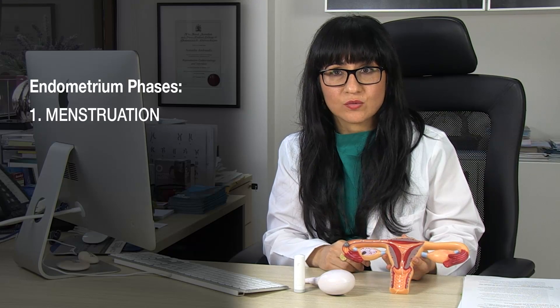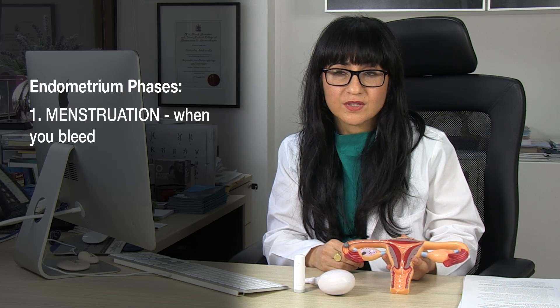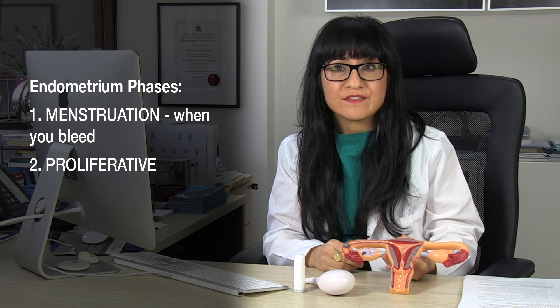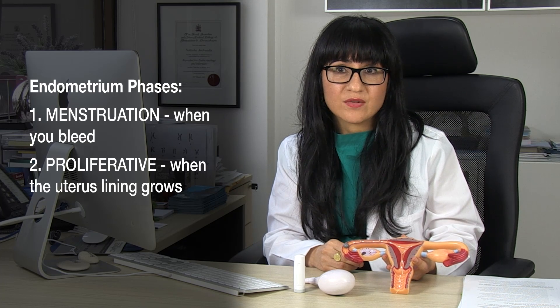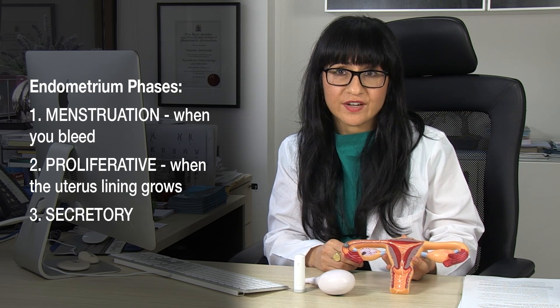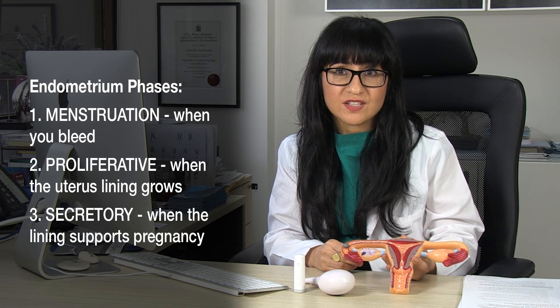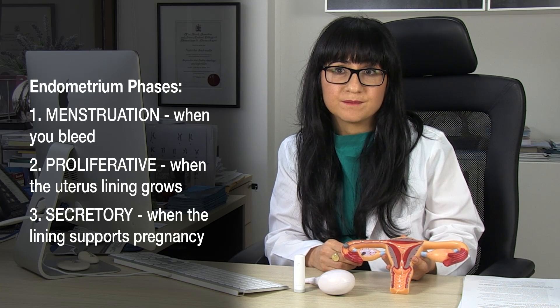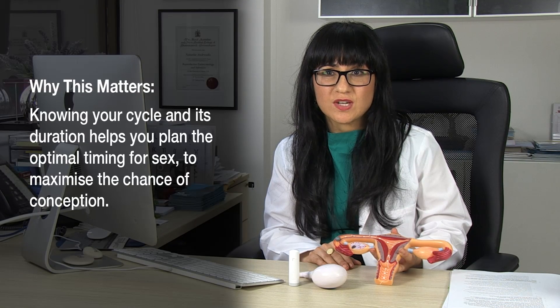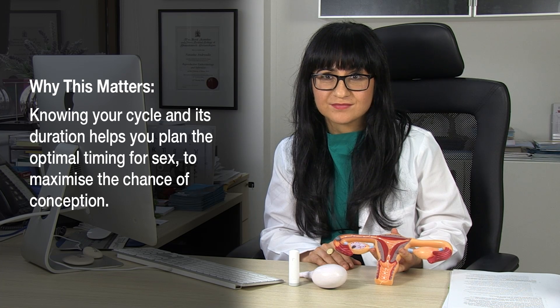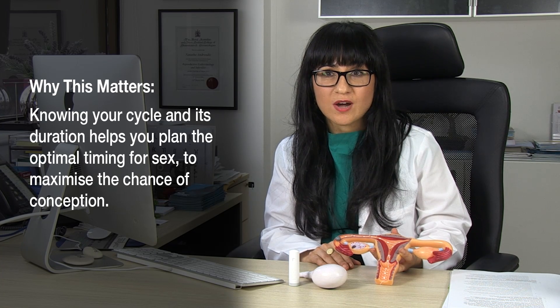The first phase is menstruation, when you've got a period. The second phase is what we call the proliferative phase, when there is the growth of the lining of the uterus. And then there is the secretory phase, which is when there's active activity to help that lining become very receptive to a pregnancy. Knowing the menstrual cycle and the phases involved means you'll have a lot more knowledge and hence power to fall pregnant — you'll be able to have sex at the right time to maximise your chances of falling pregnant.